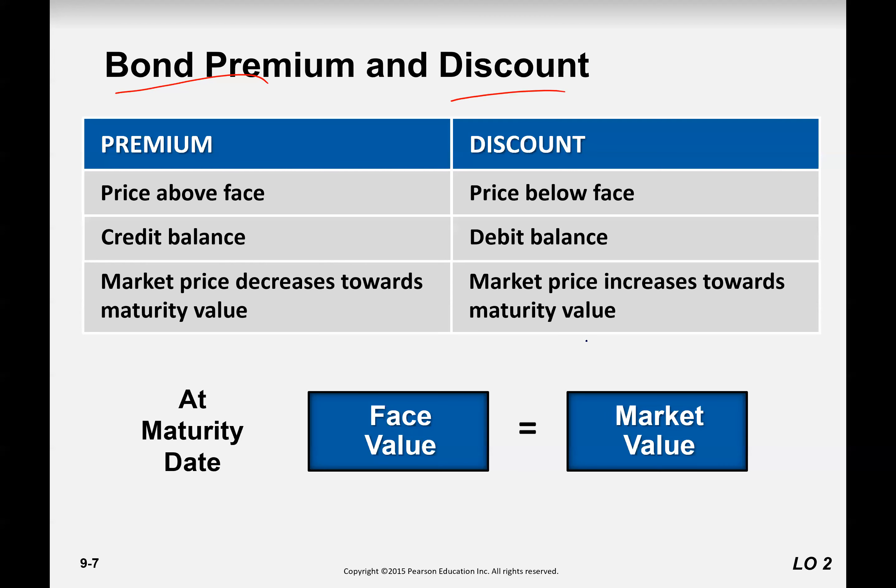So let's just talk about the slides here. When bonds are issued at premium, remember bond prices are above its face value. When bonds are issued at discount, their prices are below the face value. When below the face value, we have discount. Discount has debit balance. Premium has credit balance.